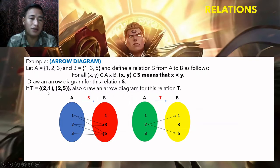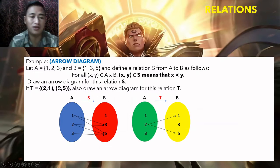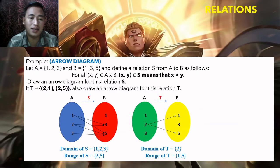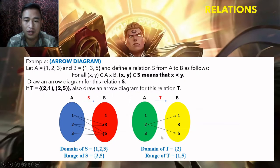If T = {(2,1), (2,5)}, draw the arrow diagram for T — there are only two arrows since there are only two ordered pairs. The domain of S is {1, 2, 3}, and the codomain is {1, 3, 5}. But the range of S is only {3, 5}, since only those values are actually used. The domain of T is {2}, and the range of T is {1, 5}.